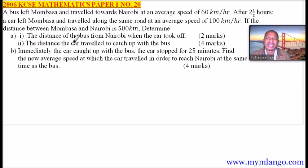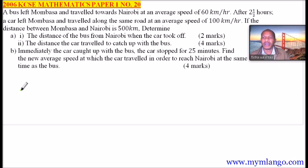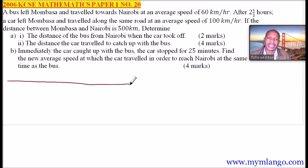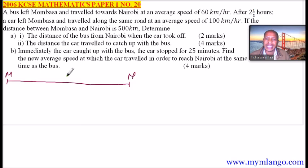We are told to find the distance of the bus from Nairobi when the car took off. What I normally do to work out this kind of question comfortably is make a sketch of the information given. So I will draw a line — this is Mombasa and this is Nairobi, 500 km apart.